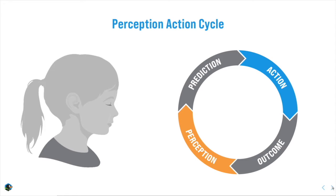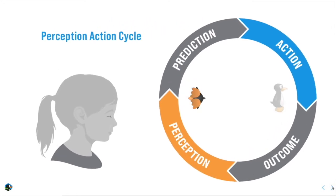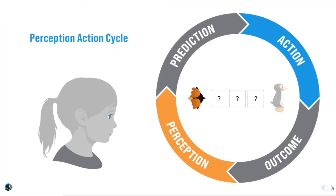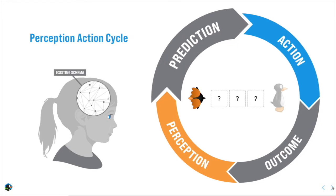Whenever we're tasked with solving a problem, and in this case the problem is how to get a penguin across the screen, we use our existing schema, literally neural networks, ideas we've already built. We use these to make a prediction.